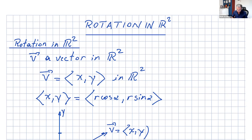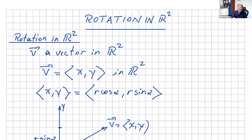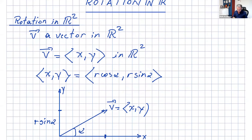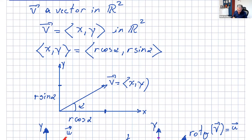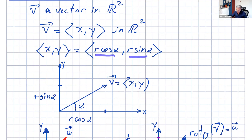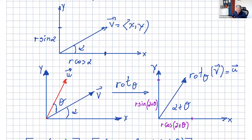Welcome everyone. In this video we're going to talk about rotation in R2. If you have a vector in R2, let's call that vector v. If we write the components x and y, we know that the x component can be written as r cosine alpha and the y component can be written as r sine alpha — so the components equal r cosine alpha and r sine alpha.